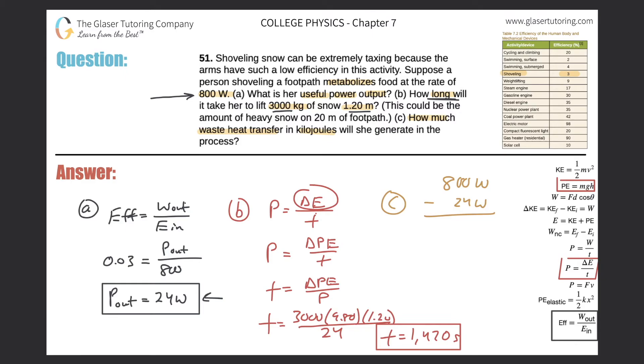This 776 watts is now the power going to heat—it's kind of like wasted energy. It's not very efficient, right? So of all this 800 watts of power that she metabolized, 97 percent of it went to waste heat transfer. Now this is in terms of power, and they want to know how much in kilojoules.